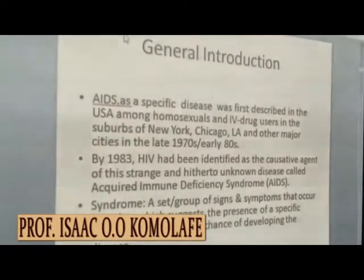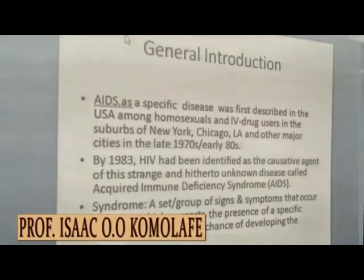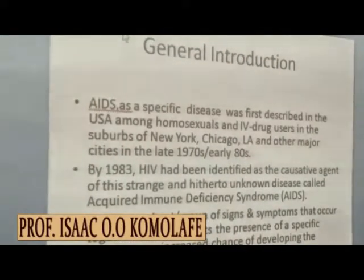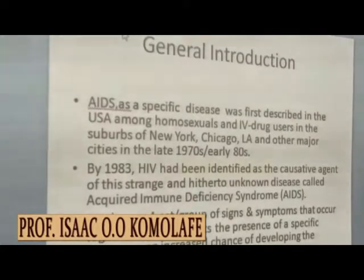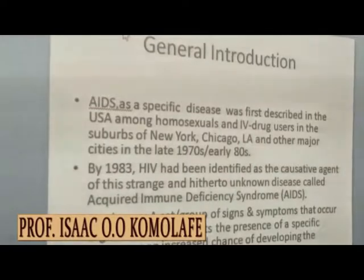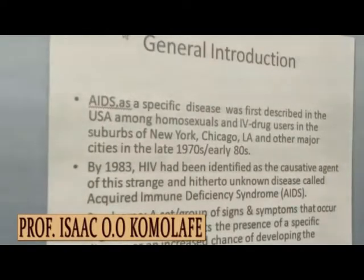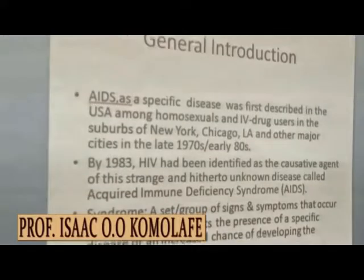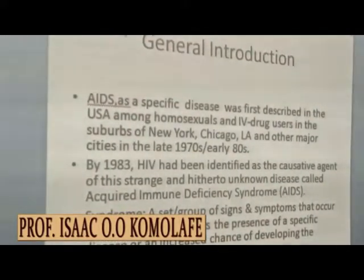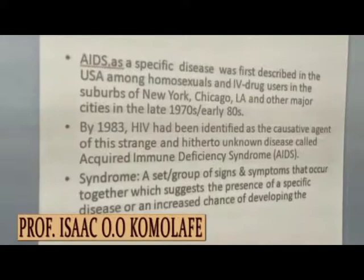I am sure you all know that HIV is the causative agent of the disease called AIDS. What you may not know is that AIDS, as a specific disease, was first described in the USA among homosexuals and intravenous drug users in the suburbs of New York, Chicago, Los Angeles and other major cities in the late 1970s — 1978, 1979 — and early 1980s. But by 1983, HIV had been identified as the causative agent of this strange and unknown disease called Acquired Immunodeficiency Syndrome, and the acronym is AIDS.